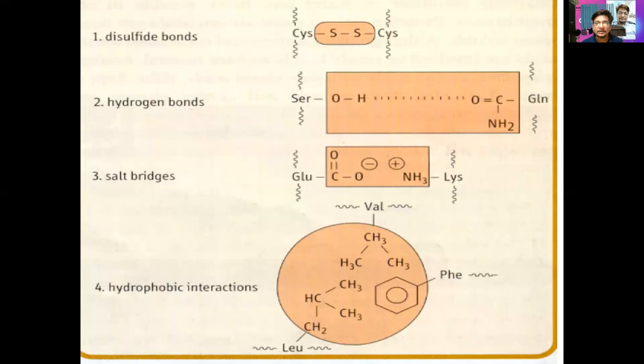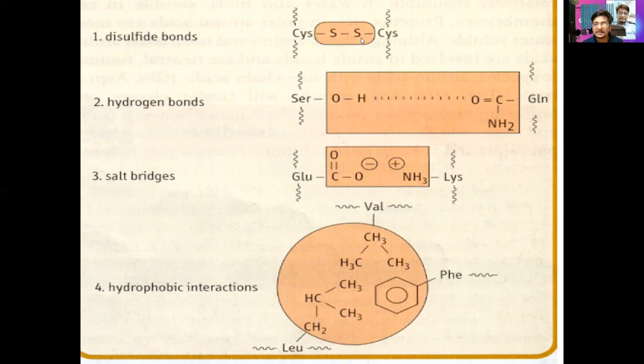Certain bonds are present in proteins, visible from tertiary structure onwards. In the primary structure there is just the peptide bond, a covalent bond. In the secondary structure, along with the peptide bond, we have hydrogen bonds, which can fold the protein into alpha helix and beta-pleated sheet structures, and sometimes into super-secondary structures. In tertiary structure onwards, we also have the disulfide bond, formed from cysteine residues with sulfide groups that upon oxidation form a disulfide linkage — a covalent bond.